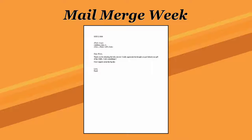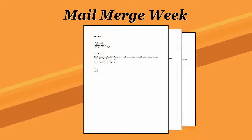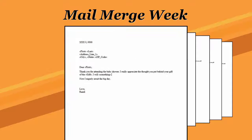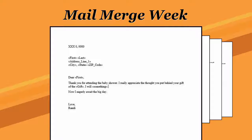Still, at the core, Mail Merge is about a form letter. That's a document you write once, but can generate unique copies. Each copy contains consistent text, but also items such as a name, address, and other details that change from document to document.